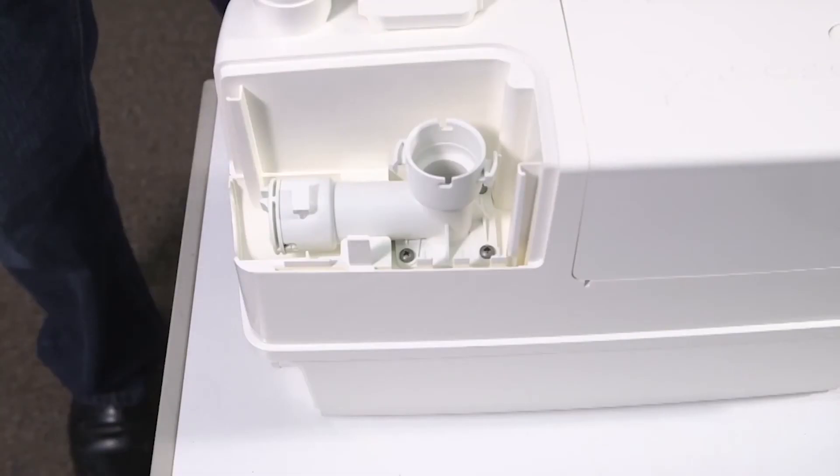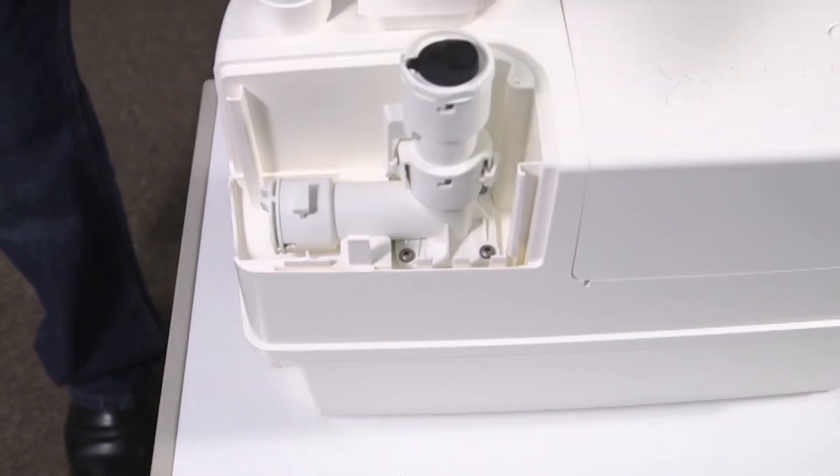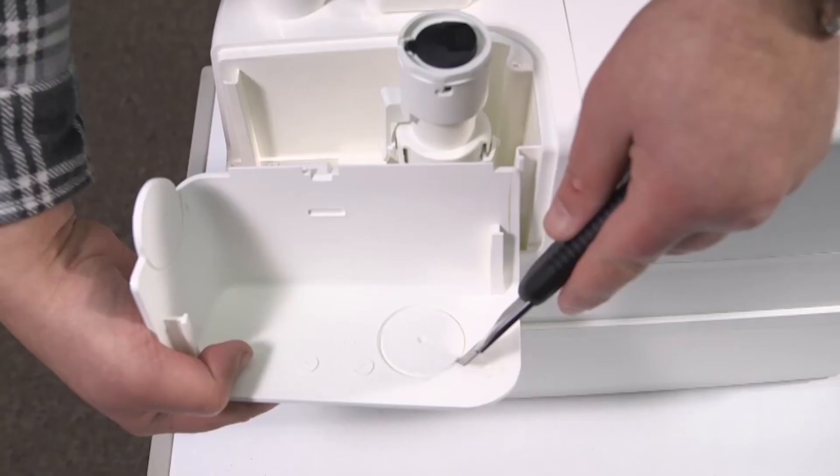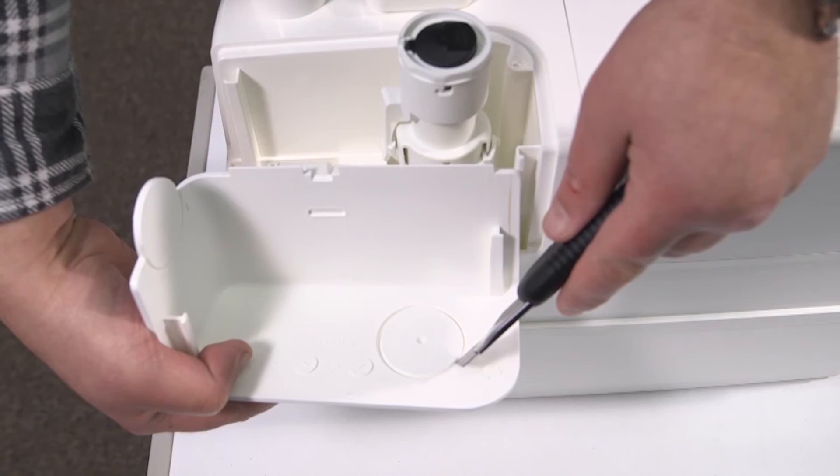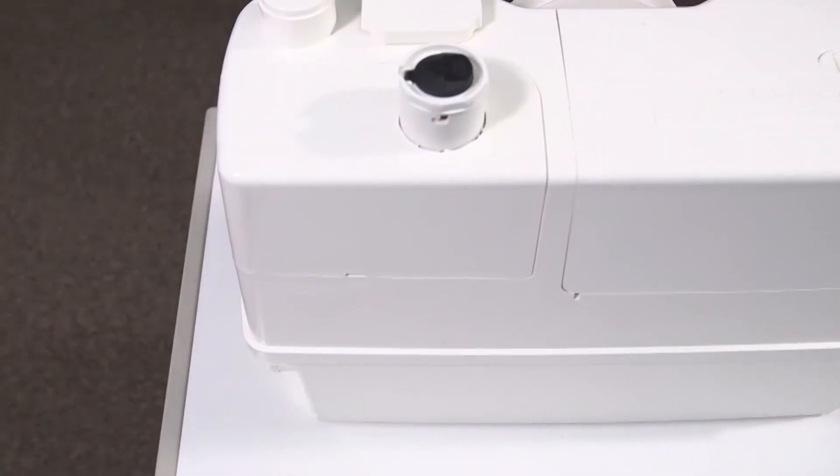Click in the outlet connector. Check to make sure the non-return valve is working. Again, use soapy water if needed. Cut out the appropriate blank on the plastic cover using a sharp knife, do not use a hammer, and replace the cover.